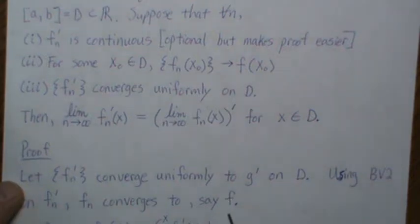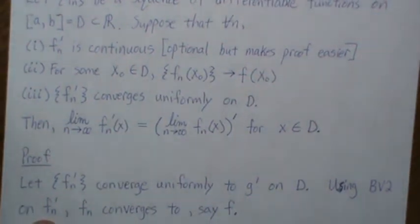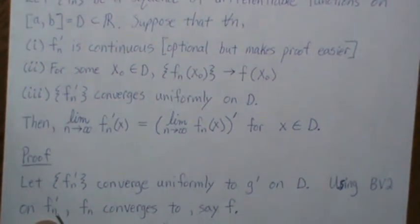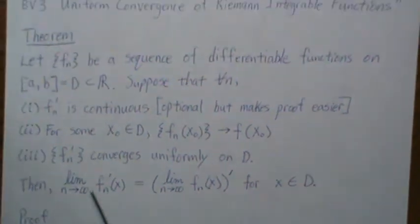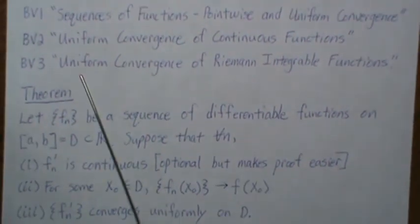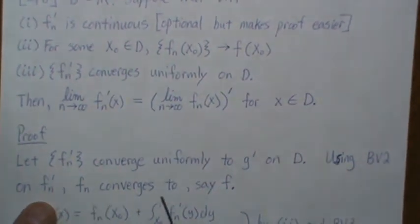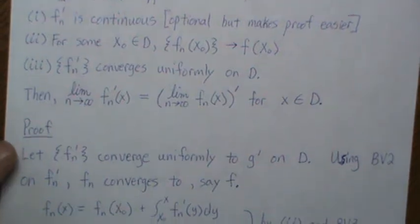Then f_n converges to f. Because f_n is continuous, actually it requires BV3 too. So since this is continuous, it converges to some function f prime. And then, since it's Riemann integrable functions, then we can also show that f_n converges to f. So it actually requires both BV2 and BV3.